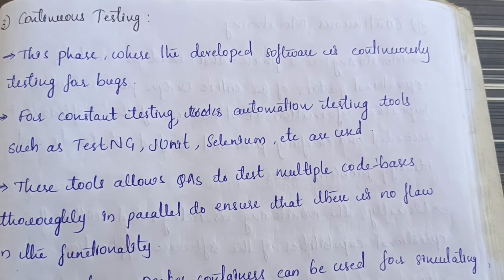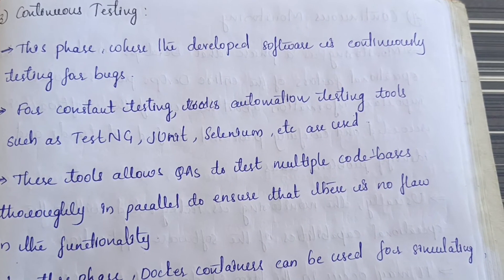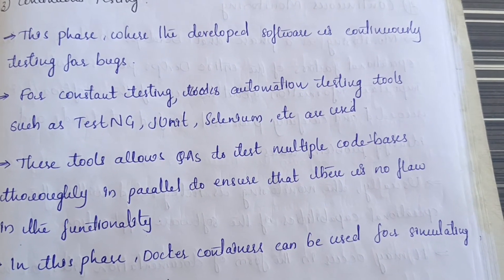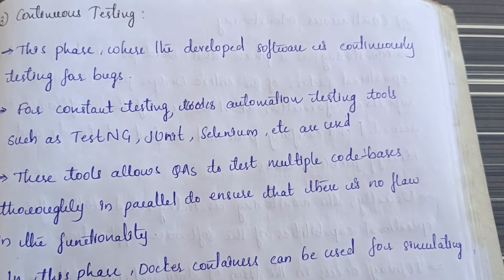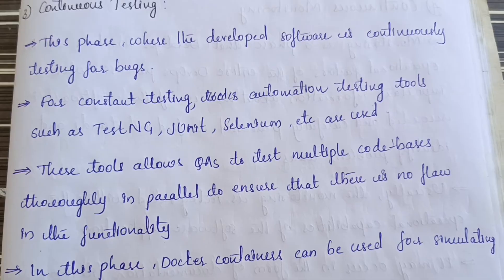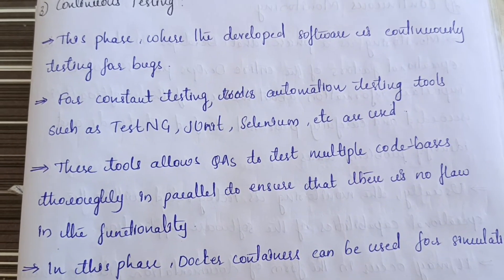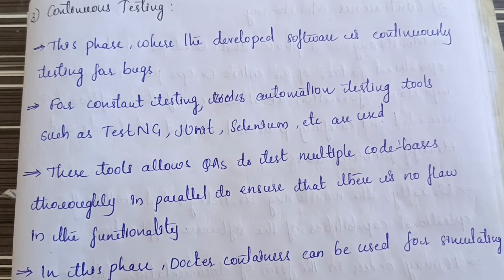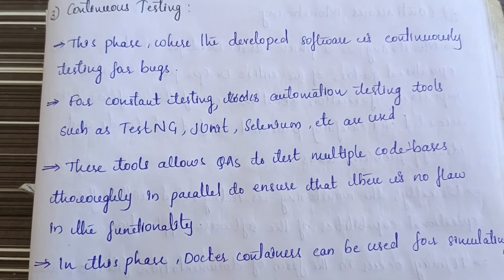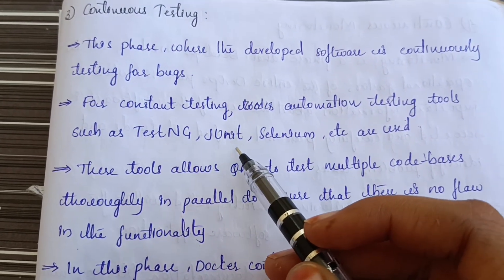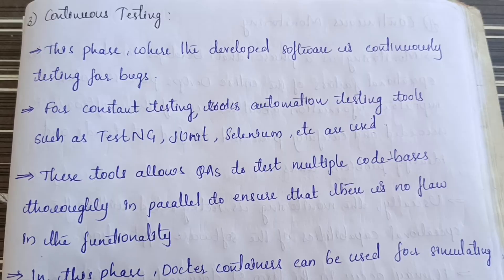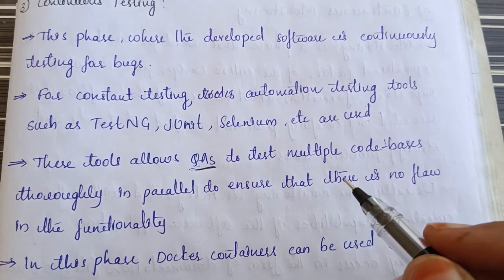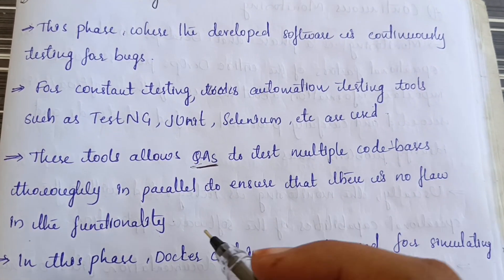Now let us discuss continuous testing. After continuous integration, the code is forwarded to the continuous testing phase, where the developed software is continuously tested for bugs. For constant testing, automation testing tools are used such as TestNG, JUnit, and Selenium. These tools allow quality assurance to test multiple code bases thoroughly and in parallel.